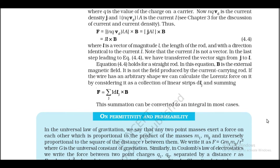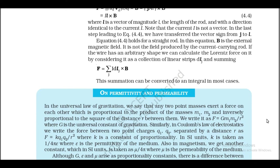If the wire has an arbitrary shape, we calculate the Lorentz force by considering it as a collection of linear strips dl_j and summing: F = Σ_j i·dl_j × B. This summation can be converted into an integral in most cases.